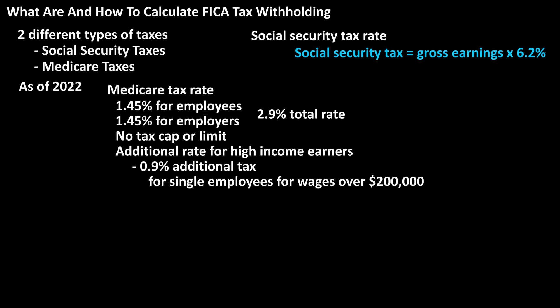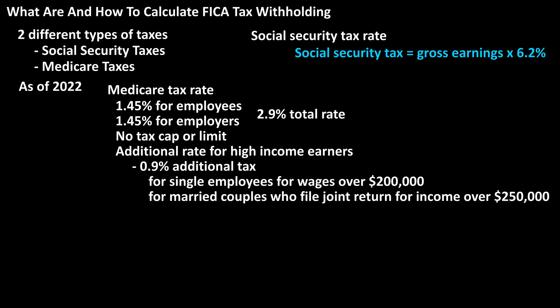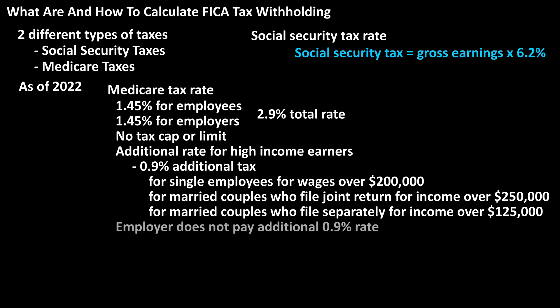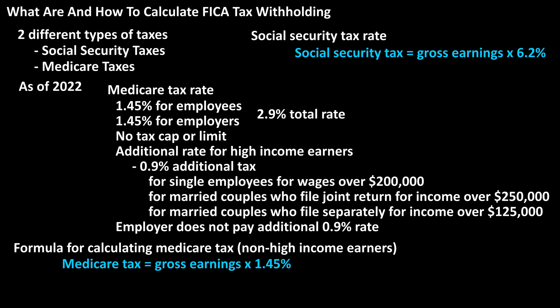If a married couple files a joint return, it's $250,000. And if a married couple files separately, it's $125,000. The employer does not need to pay the additional 0.9%.